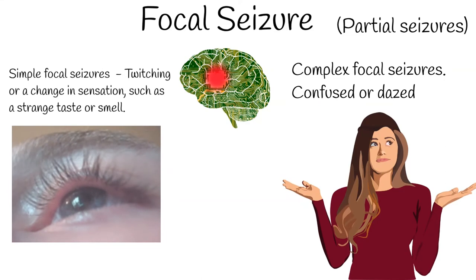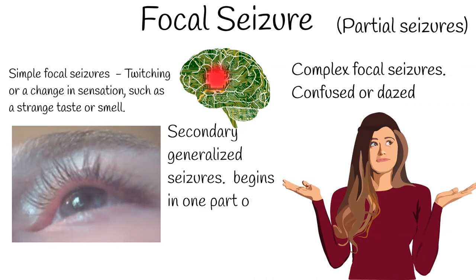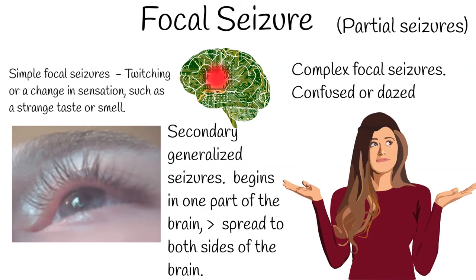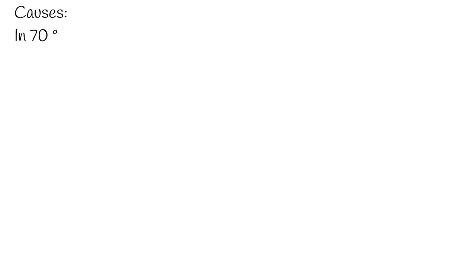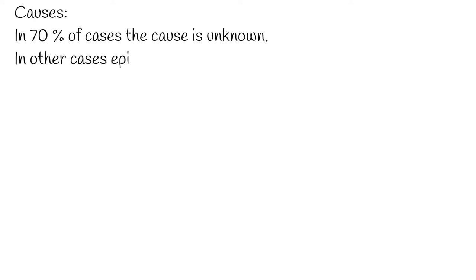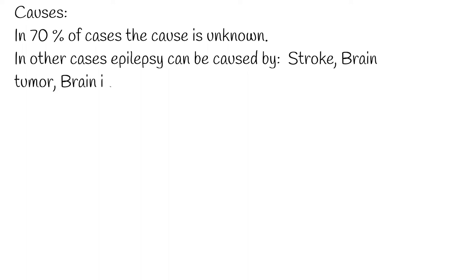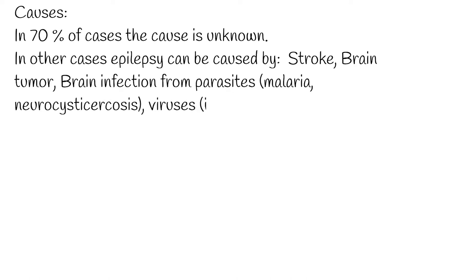Secondary generalized seizures begin in one part of the brain but then spread to both sides of the brain. In other words, the person first has a focal seizure followed by a generalized seizure. Most seizures last for several minutes. In 70% of cases the cause of epilepsy is unknown. In other cases, epilepsy can be caused by stroke, brain tumor, or brain infection from parasites, malaria, or neurocysticercosis.